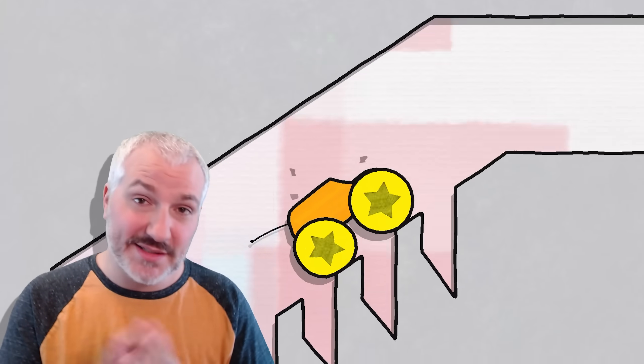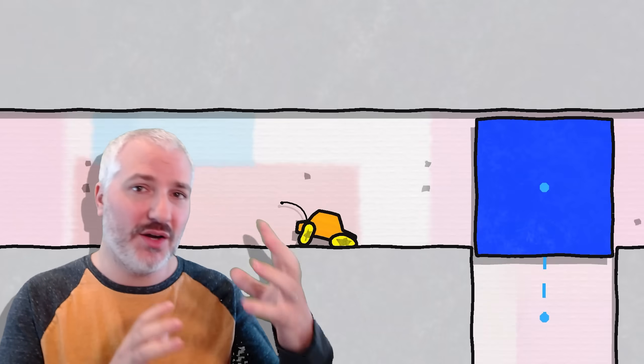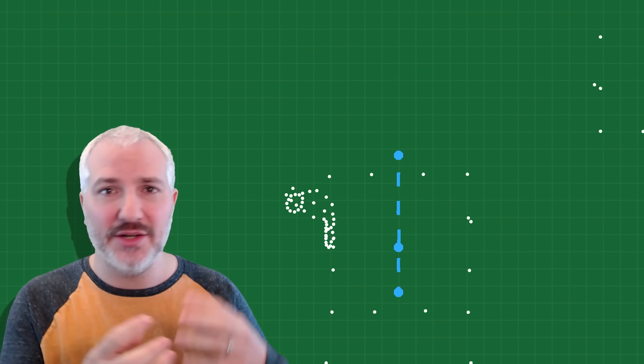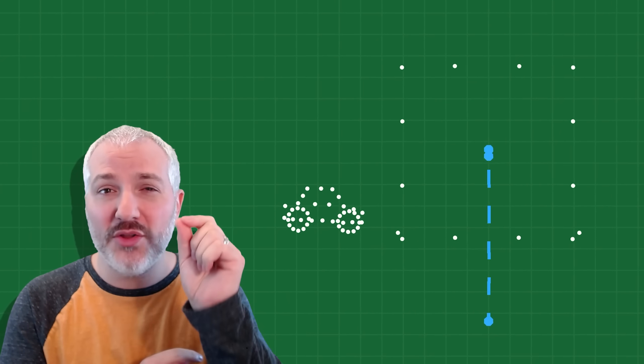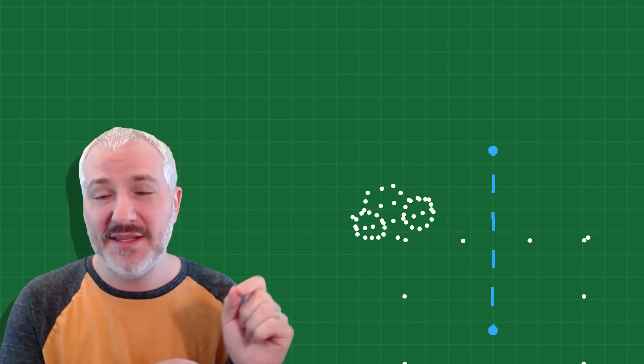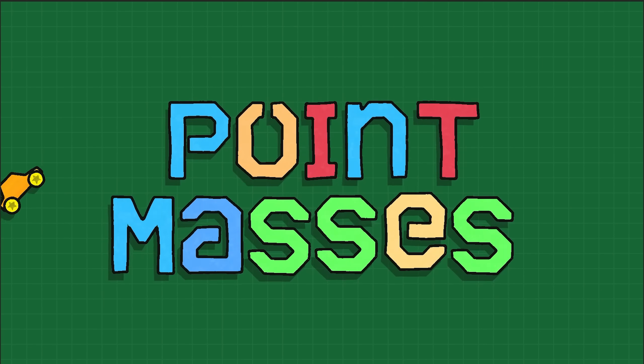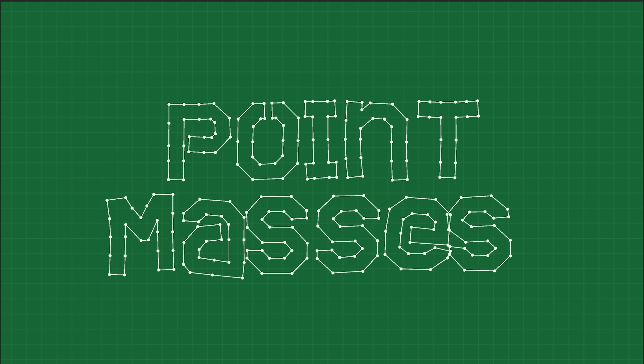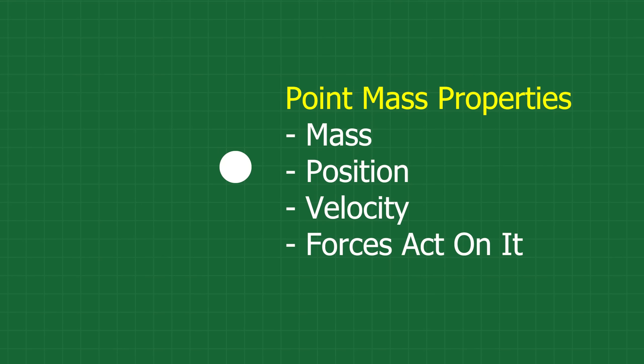One of the first things to realize is that you're not simulating a car, a tire, a block — you're simulating all the points that make it up. These are known as point masses. A point mass is just what it sounds like: it's a single point in space with a mass. It also has a velocity, and forces can act upon it, which will affect its velocity, which will affect its position.